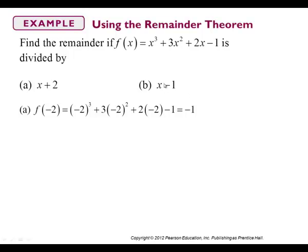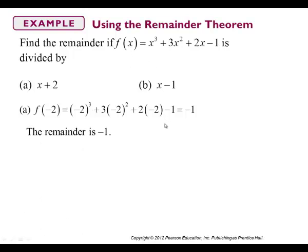For part b, we set x − 1 equal to zero, we get x = 1. We put positive 1 into the polynomial and we end up with a remainder of 5. So if we were to divide x − 1 into our original polynomial, we would get a remainder of 5. That's the remainder theorem, and it can be very useful in checking our work to verify that we divided correctly.